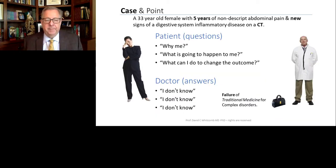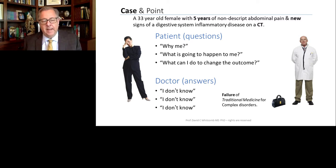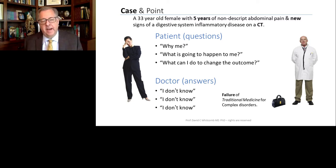I'd like to start with a hypothetical case of a 33-year-old woman with five years of nondescript abdominal pain, and she has new signs of a digestive system inflammatory disease on a CT scan. When she sees this report, she becomes very worried. She begins looking on the internet and trying to find a doctor, and she only has three questions: Why me? Nobody in my neighborhood or my family has ever had anything like this before. What's going to happen to me? And finally, what can I do to change the outcome?